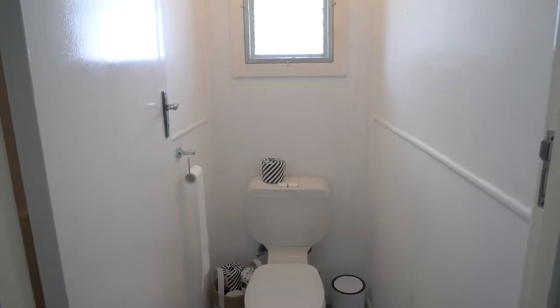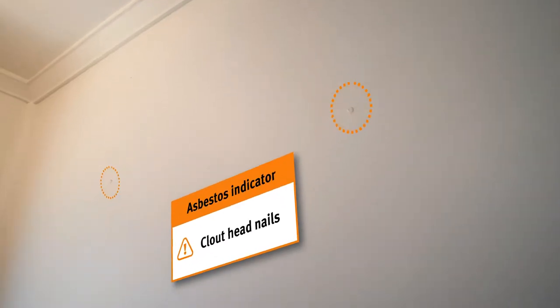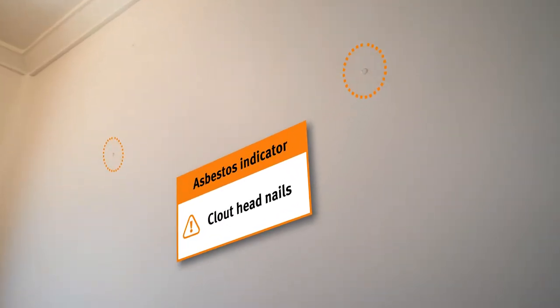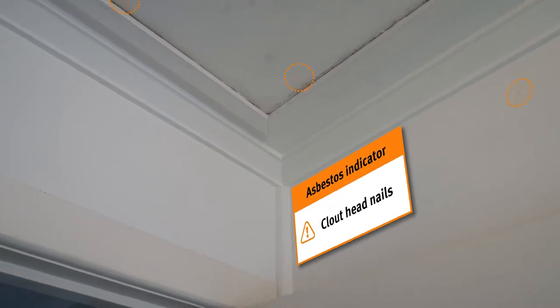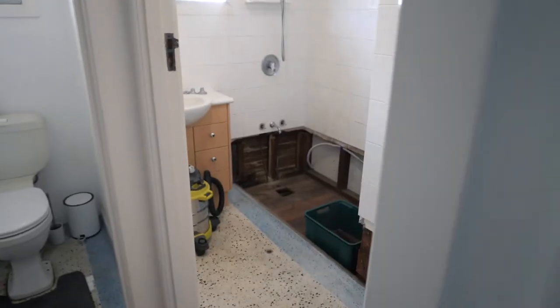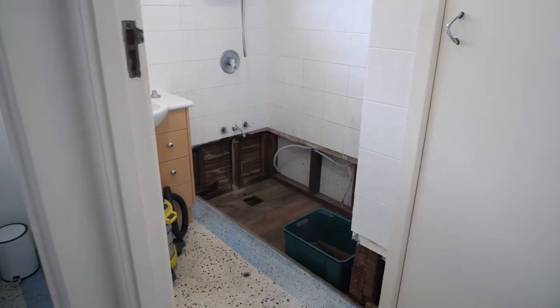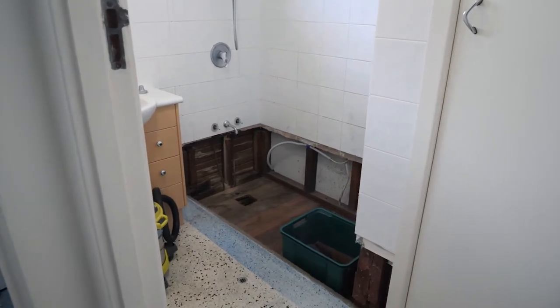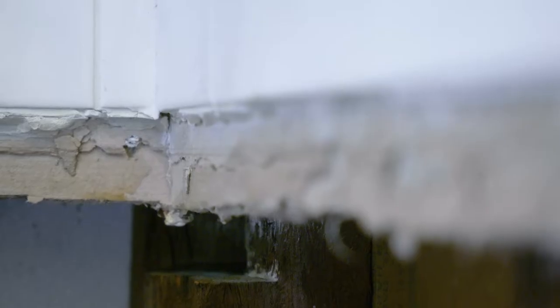The toilet also has got wall sheeting with protruding nails. The ceiling's got protruding nails. The homeowner started some renovation work and as they're renovating, they came across that this bathroom has been renovated before.